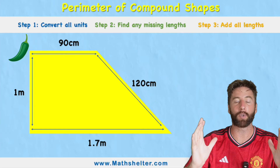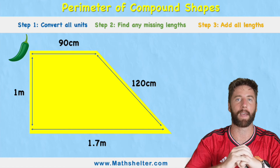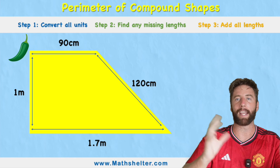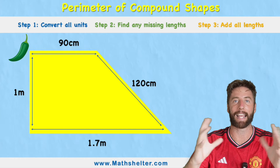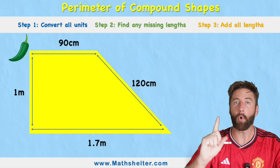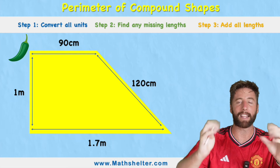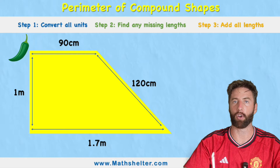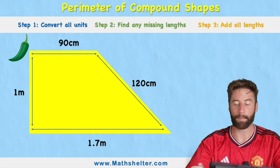First of all we need to understand that compound and composite mean the same thing. Depending on the school that you're in you might hear either of those terms, but it means the same thing — basically we've got more than one shape that have come together to form a new shape that might not look familiar, a bit like this one we've got on the screen here.